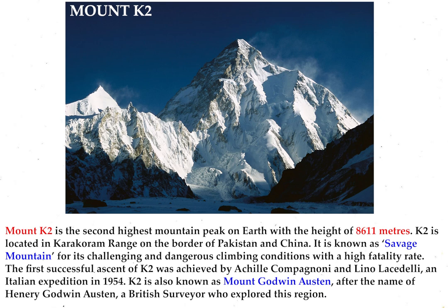Mount K2 is the second highest mountain peak on earth, with a height of 8,611 meters. K2 is located in the Karakoram range on the border of Pakistan and China. It is known as the Savage Mountain for its challenging and dangerous climbing conditions with a high fatality rate. The first successful ascent of K2 was achieved by Achille Compagnoni and Lino Lacedelli of an Italian expedition in 1954.